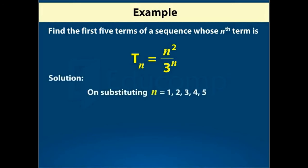therefore, on substituting n equal to 1, 2, 3, 4, 5 in Tn, we get: